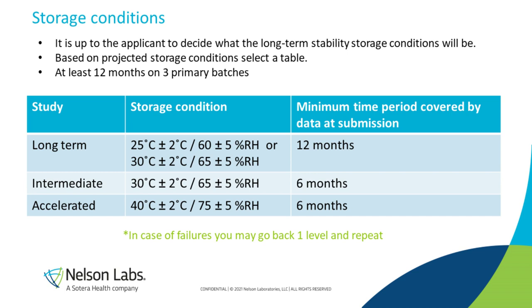Based on stress testing and expected storage of the product, we select one of three storage options: long-term, intermediate, or accelerated. The last column has the minimum time point needed for data before submission to the regulatory agency — this is just a minimum, and we would normally test through at least 12 months on the three batches. If there are failures, you can go back to level one and start over. This table is for ambient storage; if using refrigerated or frozen storage, you would store at your intended conditions for 12 months at a minimum.